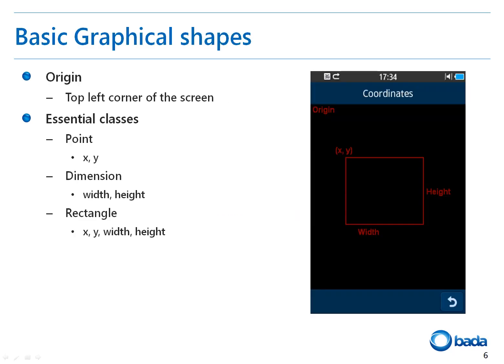Now let's look at some of the basic graphical shapes we'll be using with Bada graphics. In Bada, the originating point of the coordinates is the top left corner of the screen. A few classes that support geometry functions are pre-defined. The first is the point class — a point represents the position of a point and contains x and y coordinates. The dimension class represents the size and contains the width and height. A rectangle is a combination of the point and dimension classes and contains the x, y, width, and height items.